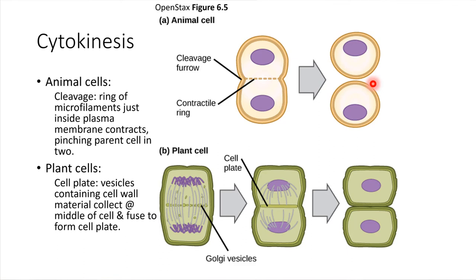Plant cells are a little bit different. Plant cells, remember, have a cell wall to deal with. So for a plant cell, what would happen is a new cell wall would be formed right down the middle. And that's possible through the use of vesicles.